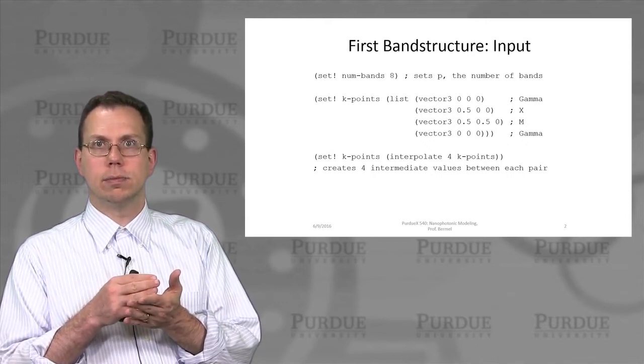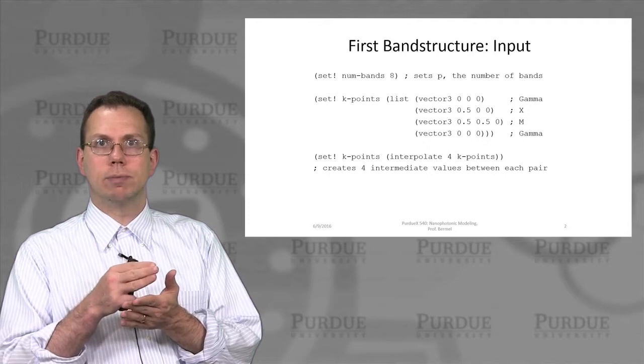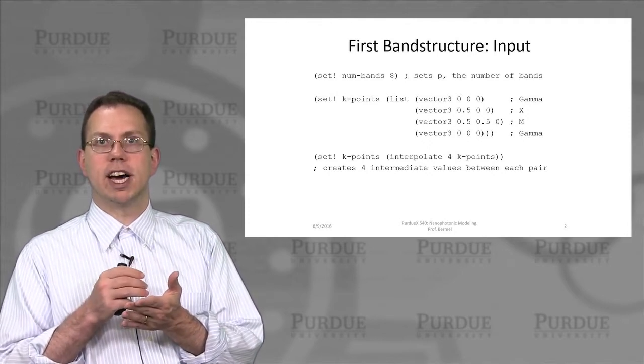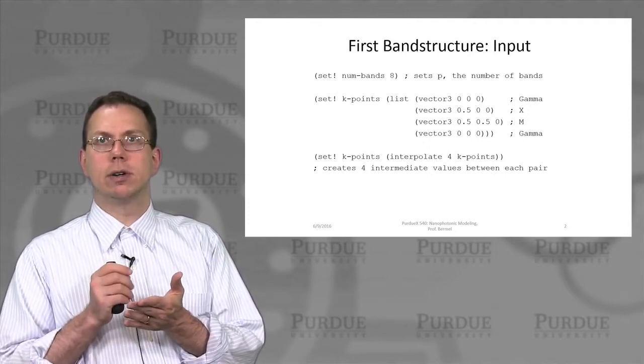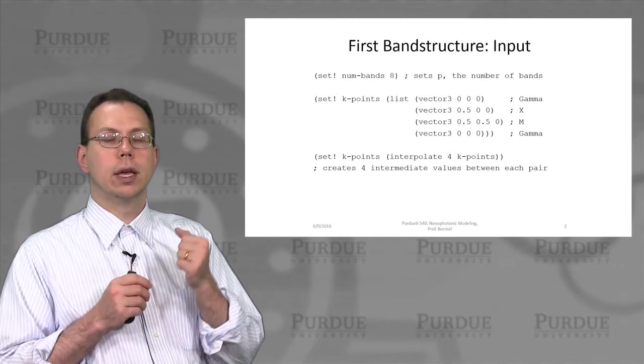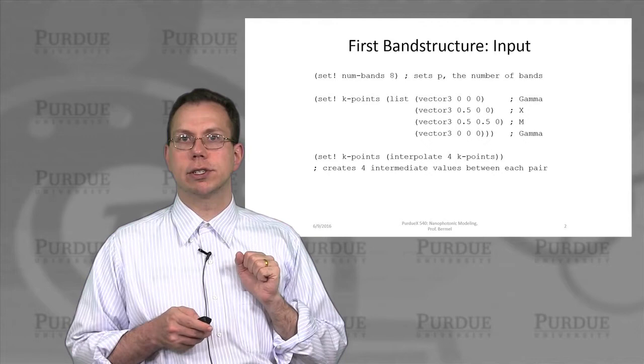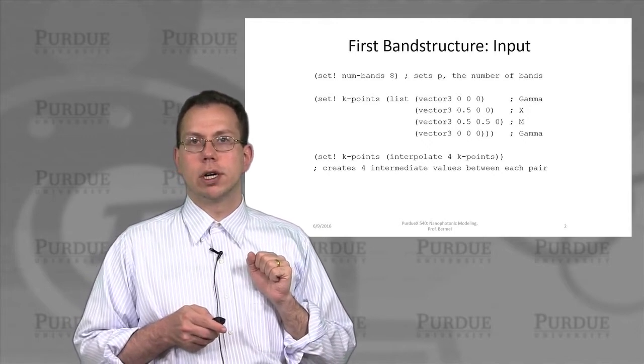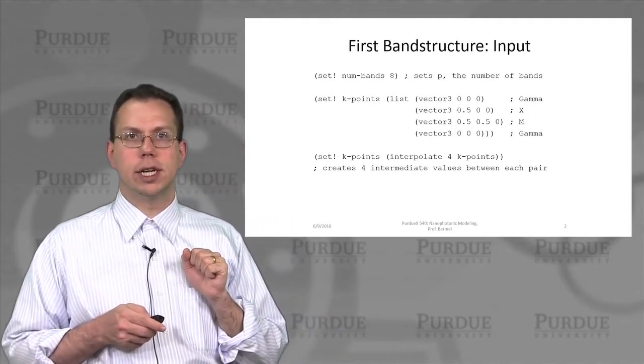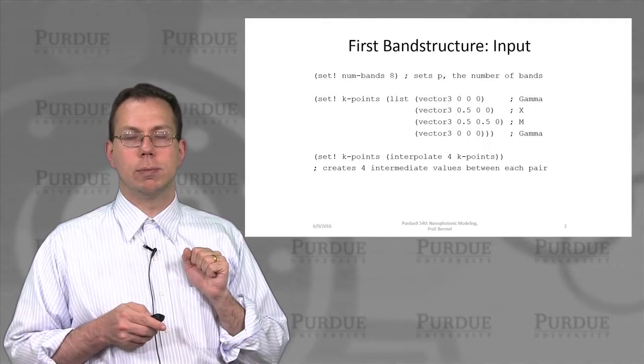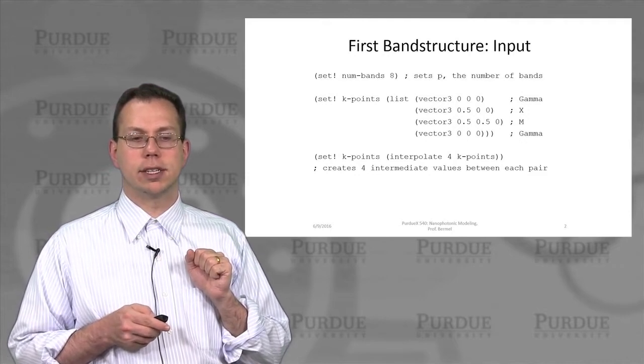where kx is equal to pi over a, to m where kx and ky are that value, and then back to gamma where all k's are equal to 0. We also add this interpolation function which gives us an extra set of four k points in between each of those special k points, and so that gives us a smoother curve.